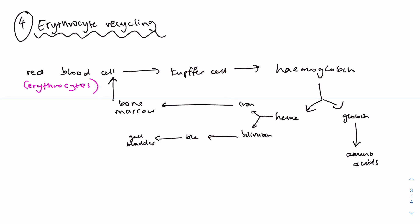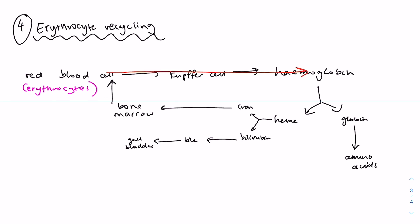So Kupffer cells are specialized phagocytes within the liver which engulf red blood cells and break them down. So that's what happens in this process. The red blood cells are broken down via phagocytosis, via the Kupffer cells, to produce hemoglobin.